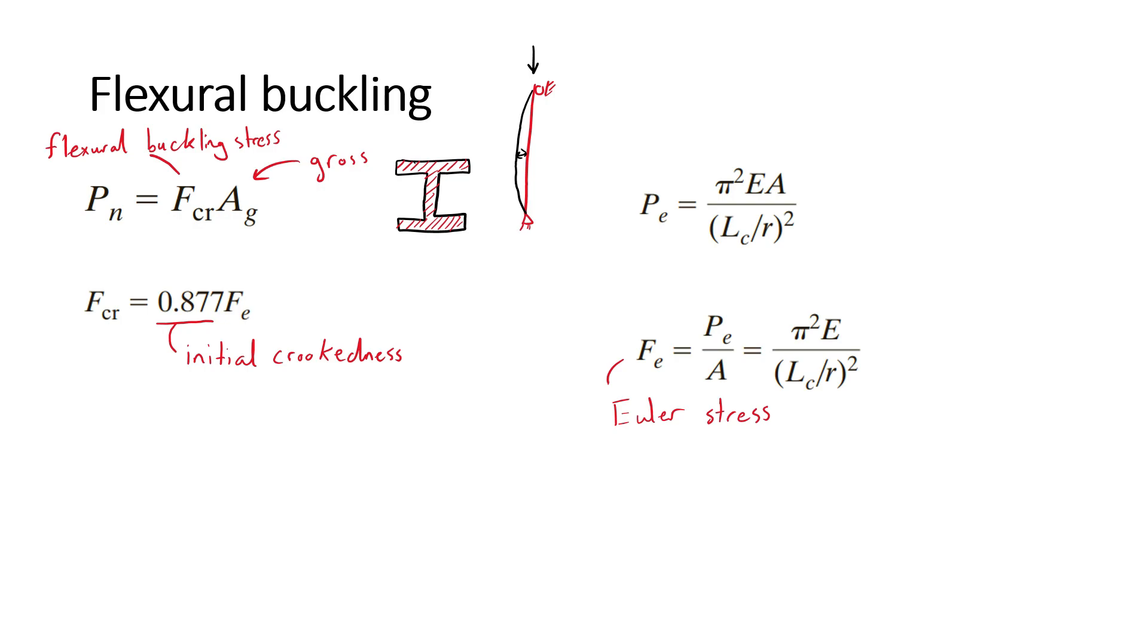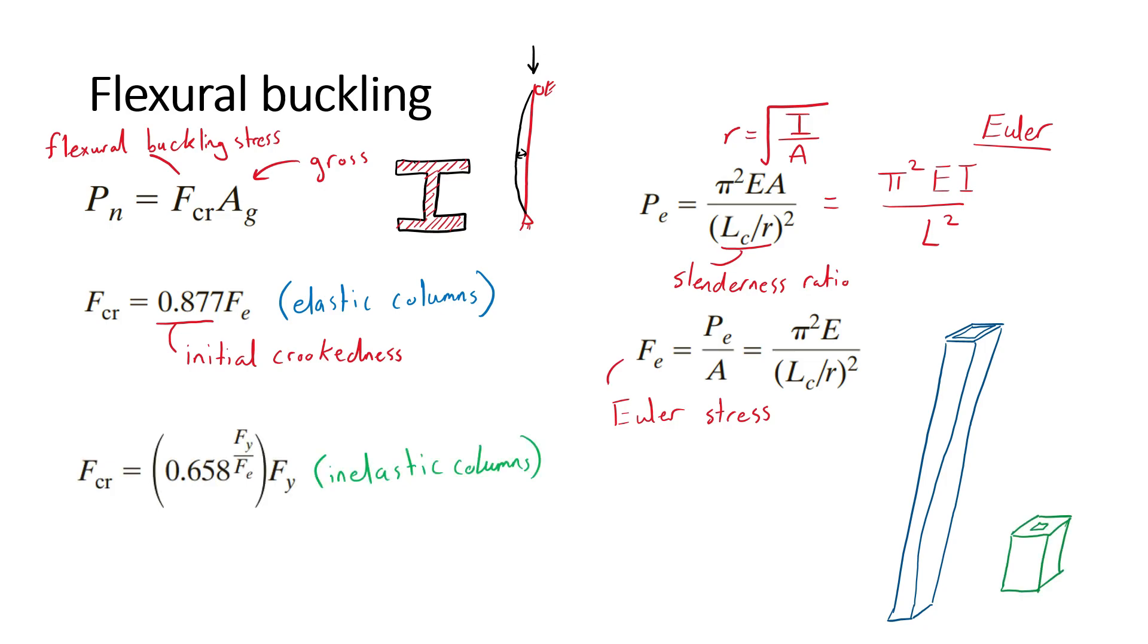This flexural buckling stress is for elastic columns that are slender and long. We can recall Euler buckling value for the pinned condition from the previous video about column analysis, link in the description down below. We can rewrite the equation for the Euler critical load in terms of the radius of gyration, R. And the term LC over R is called the slenderness ratio of the column. For bulky and short columns, the inelastic columns case will apply, where FCR is equal to the following value where F sub Y is the yield strength of the column.